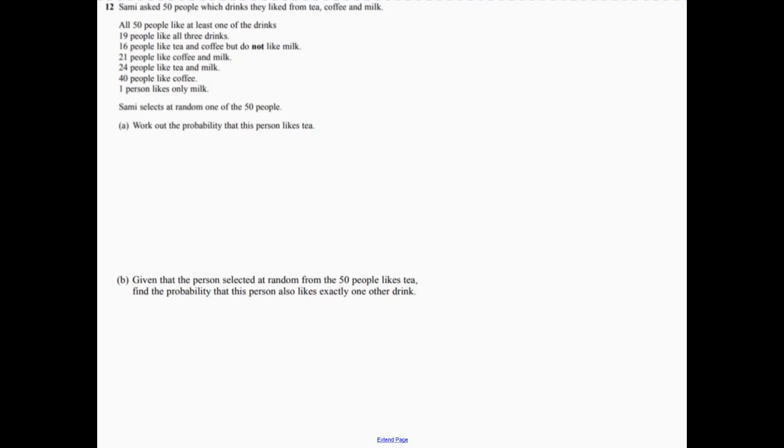Question 12. The hardest thing about this probability question is recognizing that a Venn diagram is probably the easiest way of tackling this.